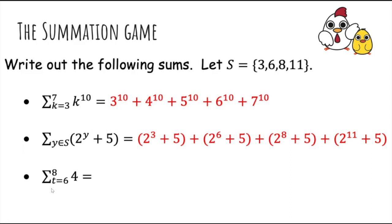Okay, what about this one? We sum from t is equal to 6 up to 8 of the constant 4. Well, the first term is when t is equal to 6, we get a 4. The next term, t is equal to 7, we get a 4. Then the last term is when t is equal to 8, we still get a 4, so we actually get 3 4s.